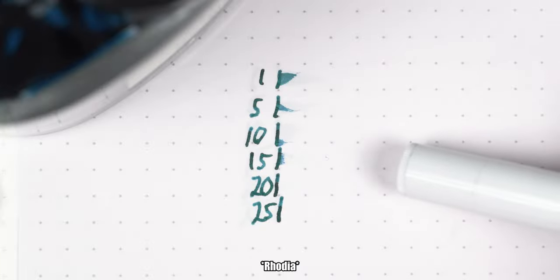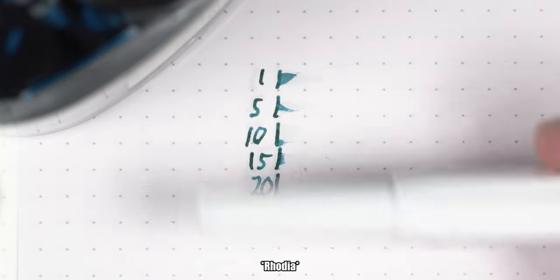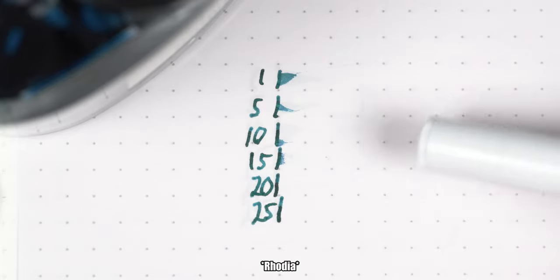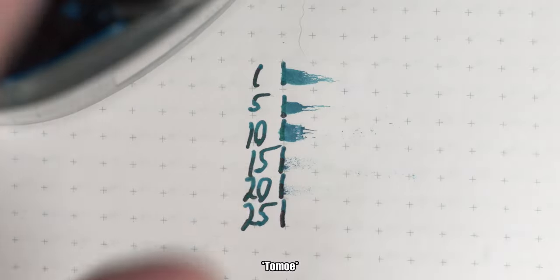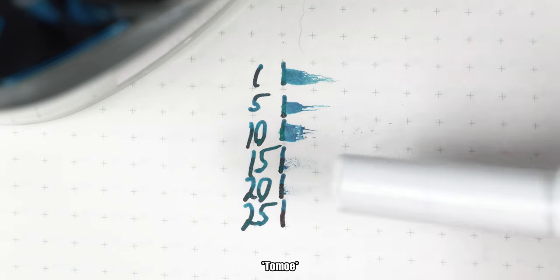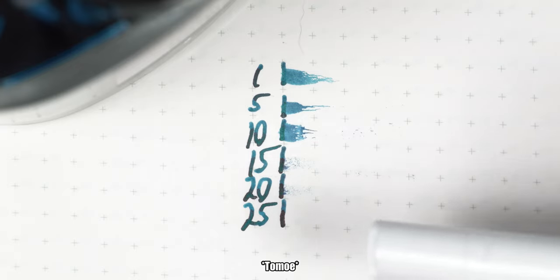Moving on over to the KPIs, we have a respectable showing on both Rhodia and Tomoe. Out of the broad nib of this Kaweco Sport, we are looking at a 15 to 20 second dry time here on Rhodia, and when we move on over to Tomoe, it's more in the 20 to 25 second range. Sure, this isn't the fastest drying turquoise adjacent fountain pen ink that we've looked at here on the channel, but out of a broad nib, I'm calling this one good enough.